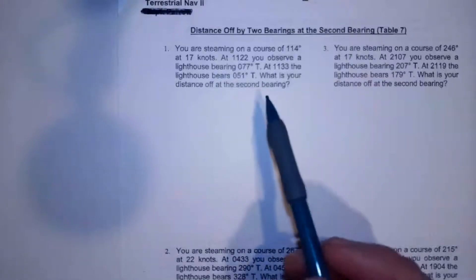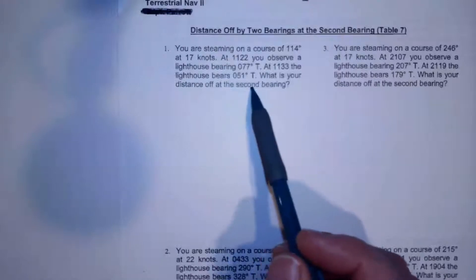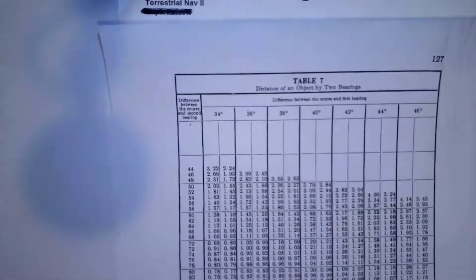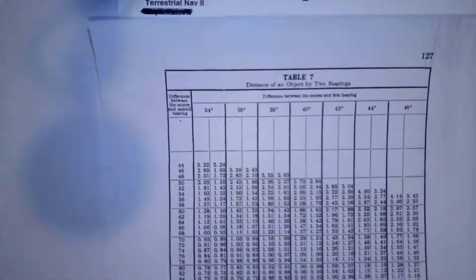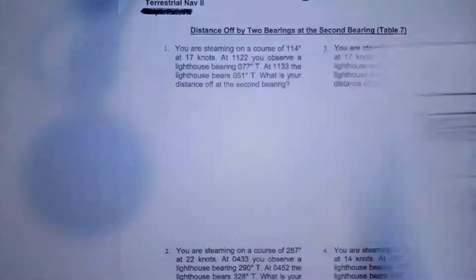In this video we're going to do a Table 7 problem, calculate the distance off at second bearing. We'll be using Table 7 of Bowditch 2, 1981. Different editions of Bowditch, the table will be a different number, but that's the one we're using here.